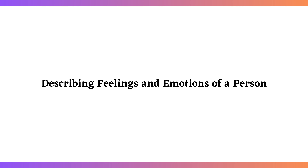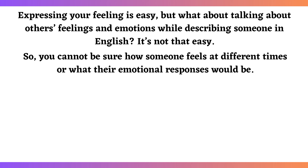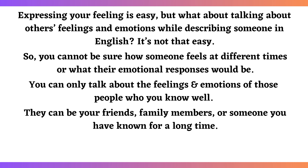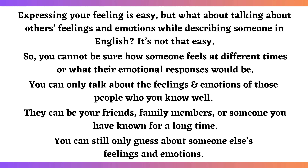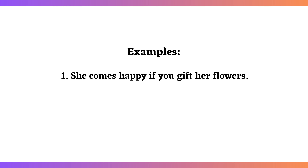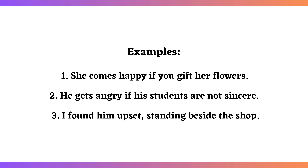Describing feelings and emotions of a person: expressing your own feeling is easy, but talking about others' feelings and emotions while describing someone in English is not that easy. You cannot be sure how someone feels at different times. You can only talk about the feelings and emotions of people you know well — friends, family members, or someone you have known for a long time. Examples: She becomes happy if you gift her flowers. He gets angry if his students are not sincere. I found him upset, standing beside the shop.